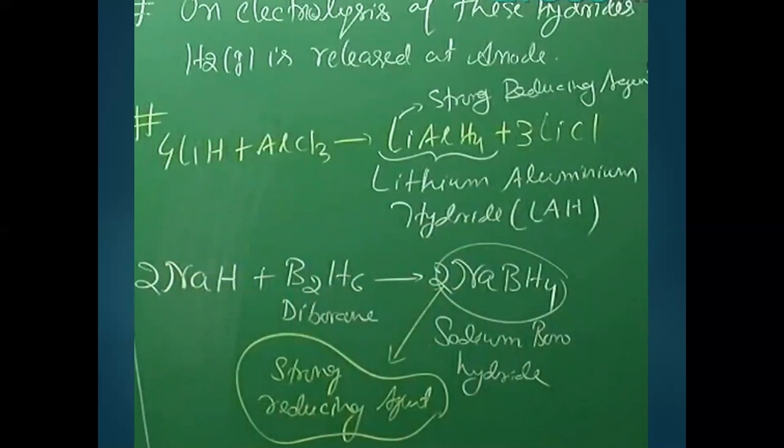An important property of ionic hydrides is that when they react with certain special compounds, they form complex hydrides that are very good reducing agents. For example, lithium hydride reacts with aluminium chloride to form lithium aluminium hydride (LiAlH4), a very strong reducing agent used in organic chemistry. Similarly, sodium hydride reacts with boron to form sodium borohydride, also a strong reducing agent.